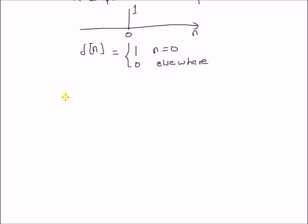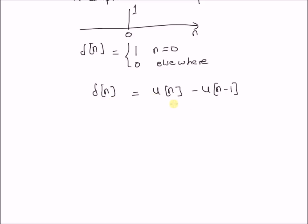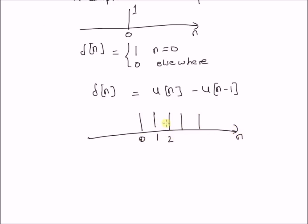Unlike the continuous version of the impulse signal, in discrete time the relation between the unit impulse and the unit step sequence is straightforward. That is, δ(n) equals the difference between u(n) and its delayed version u(n−1). This is easy to see graphically: subtracting the delayed step sequence from the original leaves a single value of one at n = 0, which is the unit sample δ(n).